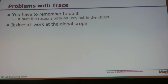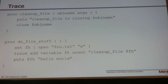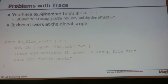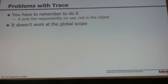The other thing is it doesn't work at the global scope. The documentation for trace says that it works — that unset gets called at the end when the interpreter is closed. But I think exit gets you out before that happens. So basically that doesn't happen when you just have a straight tclsh. Those are the two big problems: it doesn't work in a global tclsh script, and you have to remember to set the trace up.